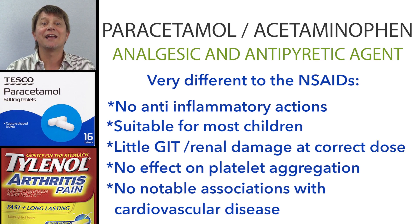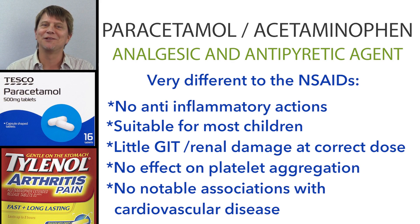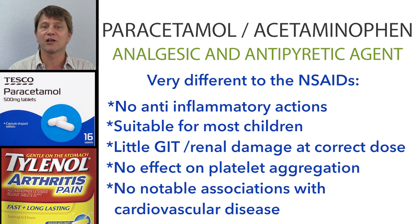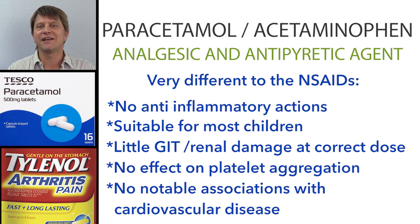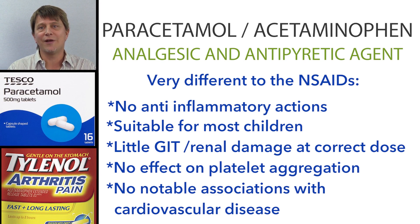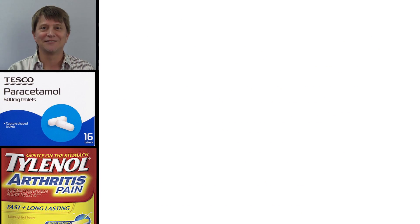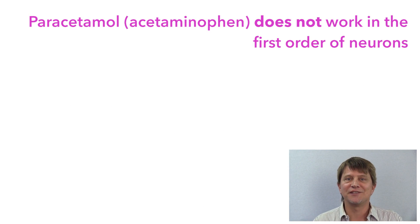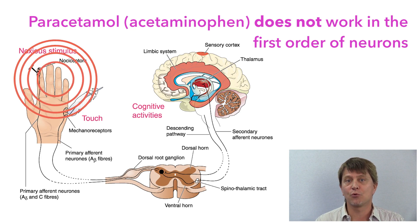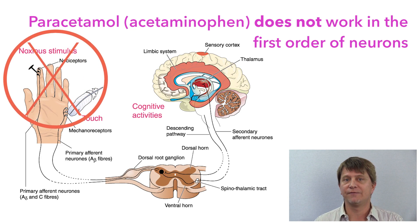Paracetamol was discovered in 1877 and after all this time we still don't know exactly how it works. It was thought to involve enzymatic inhibition of cyclooxygenase-3, working centrally only, but recent studies have cast a lot of doubt on it working on any enzymes. We can say with near certainty that it does not work in the periphery like the non-steroidal anti-inflammatory drugs.